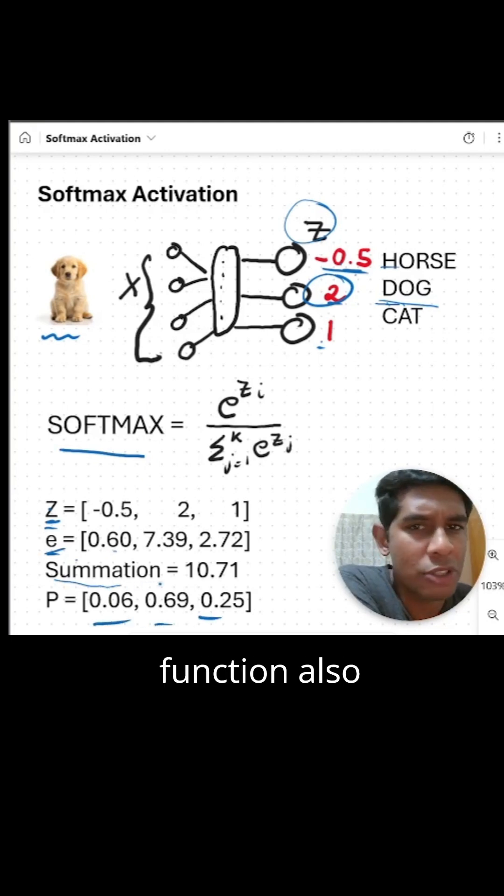And this softmax activation function also has an added benefit. You see a very small difference between 1 and 2 in the final output layer becomes a very big difference in terms of the probability output. So 0.69 and 0.25. And that's why we use the softmax activation function.